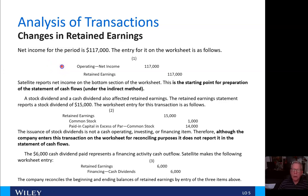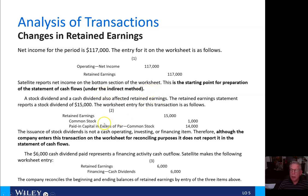For net income, we're going to have net income of $117,000 as operating income, going into retained earnings when we do our closing entries. Satellite reports net income on the bottom section of the worksheet, and this is the starting point for the preparation of the statement of cash flows under the indirect method.